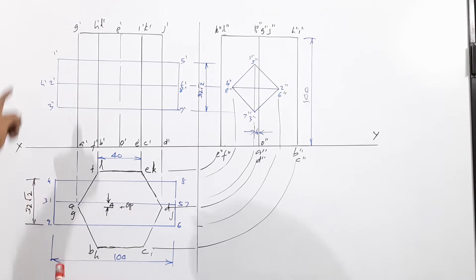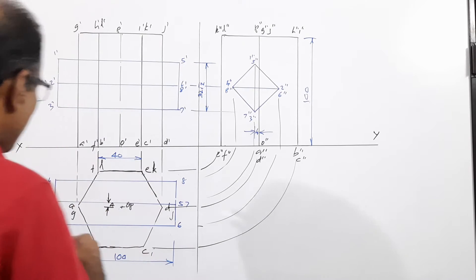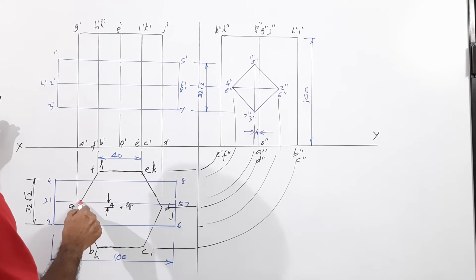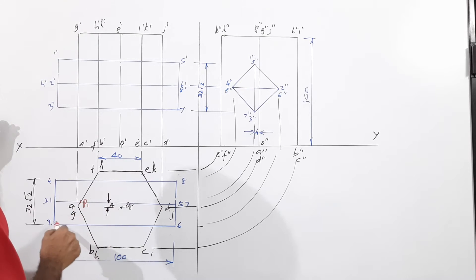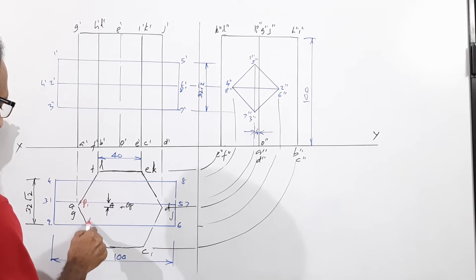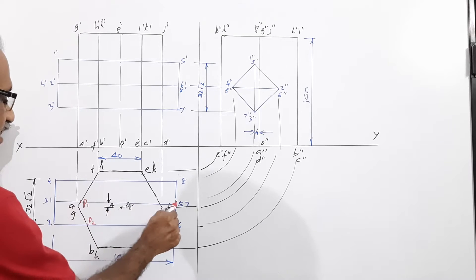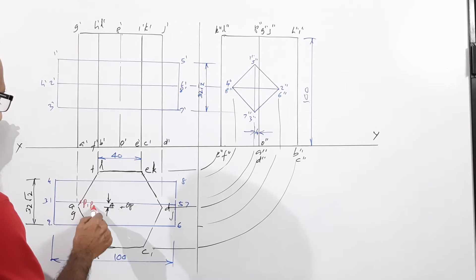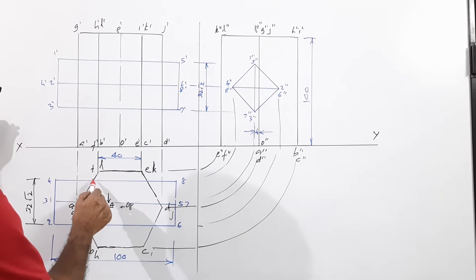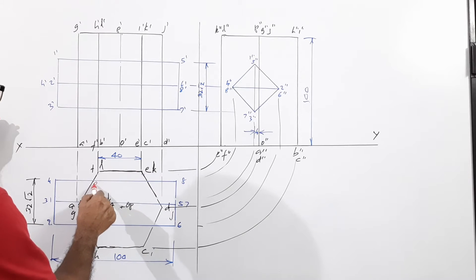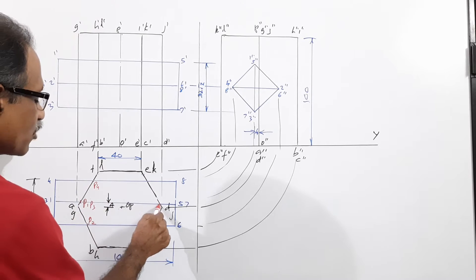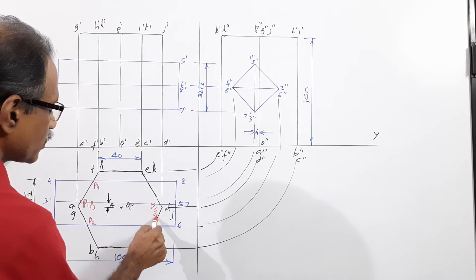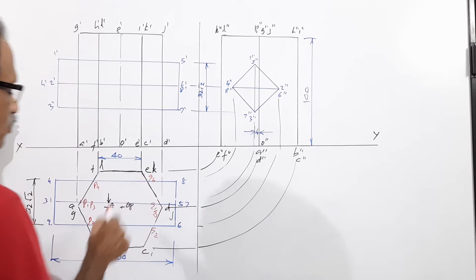The first horizontal edge 1-5 cuts the vertical prism at P1. Edge 2-6 cuts the vertical prism at P2. Edge 3-7 coincides with edge 1-5 and cuts the vertical prism at P3, meaning P1 and P3 coincide. Edge 4-8 cuts the vertical prism at P4. By similar argument, you get points Q1, Q2, Q3, and Q4 on the other end.